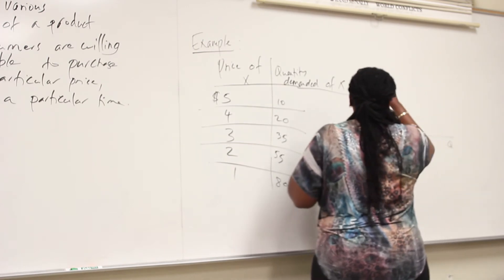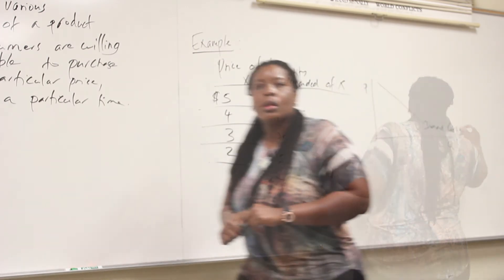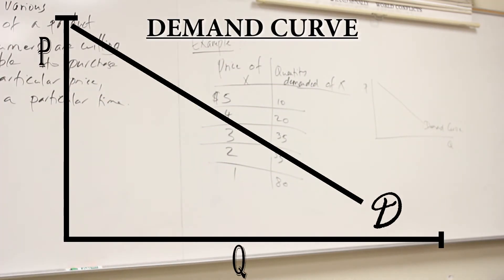Here's the quantity. Here's the price. This is your demand curve. Inverse relationship between price and the quantity demanded will mean the demand curve should be downward sloping. Everything is connected. There's no confusion.